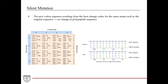A silent mutation produces a new codon sequence from a point mutation. Looking at the figure: we have the DNA sequence, the mRNA produced from it, and the normal sequences. If we substitute a guanine for this adenine in the DNA, that results in a cytosine in the mRNA, changing the codon from UUU to UUC. Looking at the codon chart, UUU codes for phenylalanine, and UUC also codes for phenylalanine — so there's really no change in the end result. The polypeptide sequence is the same.